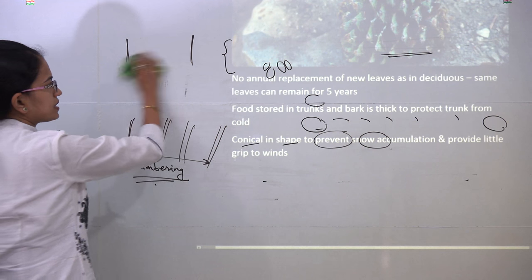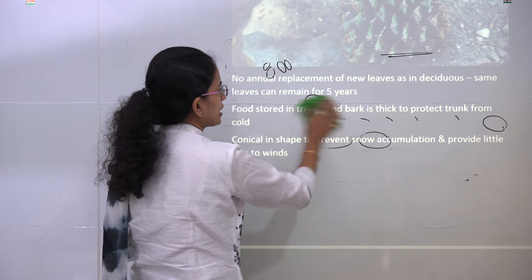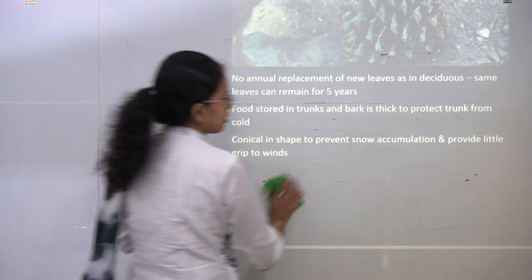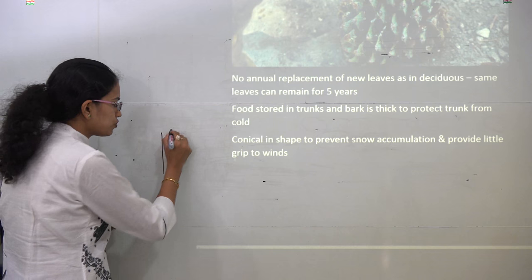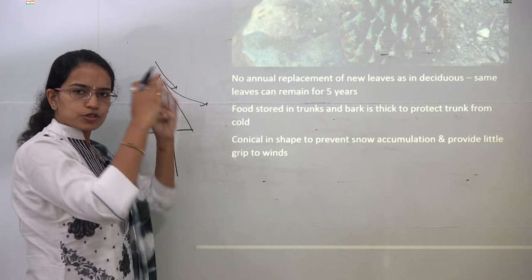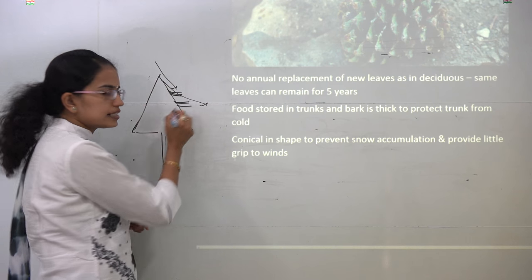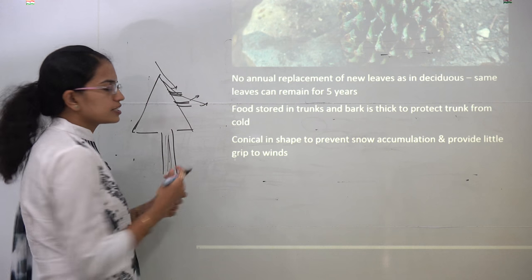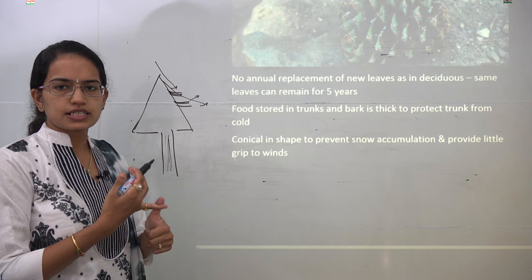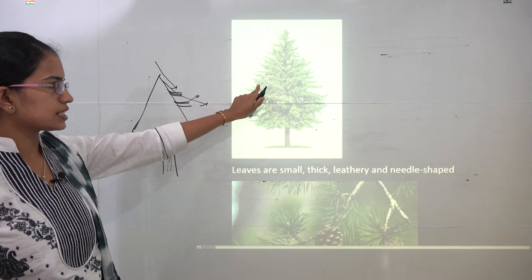There is no annual replacement of leaves as in deciduous trees; in conifers the same leaves remain for at least five years. Food is stored in the trunk or bark of the tree. The bark is thick, protecting the tree from cold. The tree is conical in shape, so all falling snow slides off and does not accumulate. Most leaves are needle-shaped, which has two benefits: it reduces transpiration, and it helps shield the tree from strong winds — the blizzards in Canada and the burans in Europe.